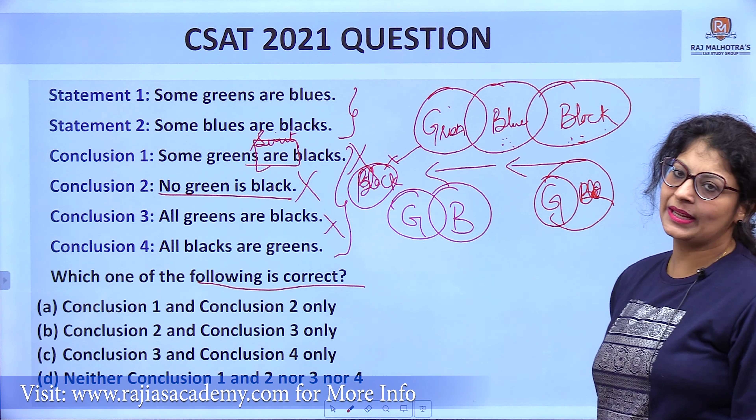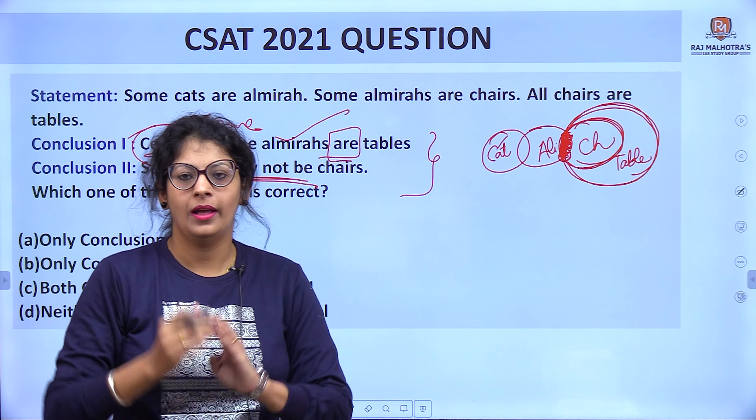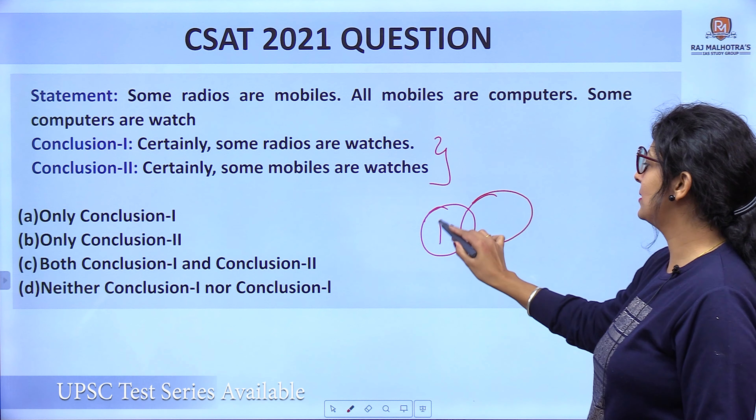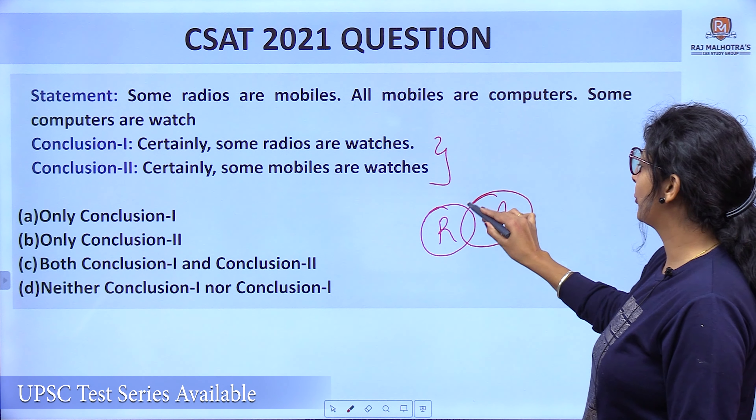Let's move to the next question. Some cats are Almiras — we make that diagram. Some Almiras are chairs. All chairs are table — so I place chairs inside table. Let's check the conclusions. First: certainly some Almiras are table. Avoid the word 'certainly' — it just means 'some'. Conclusion word is 'are', meaning surety. Almiras are inside chairs, and chairs are inside table, so some Almiras are table — first conclusion is true.